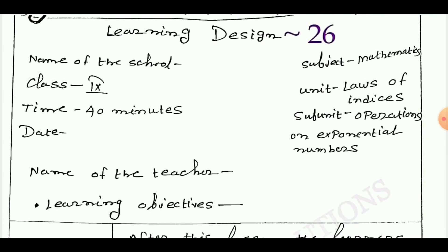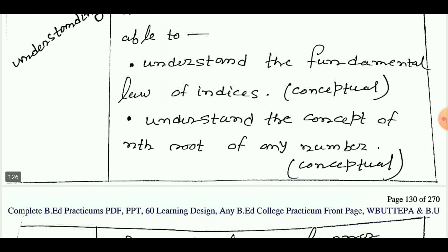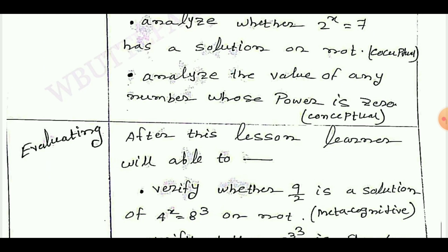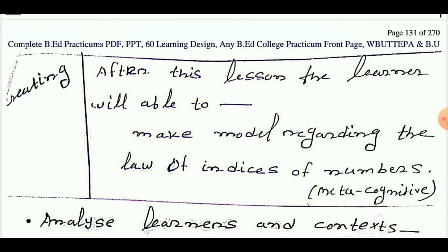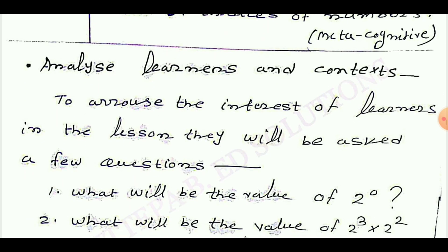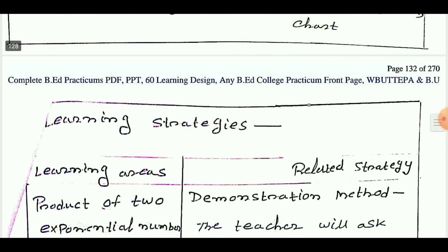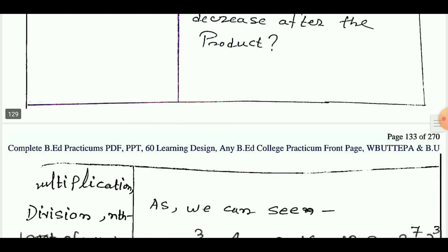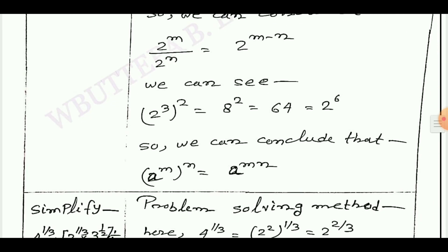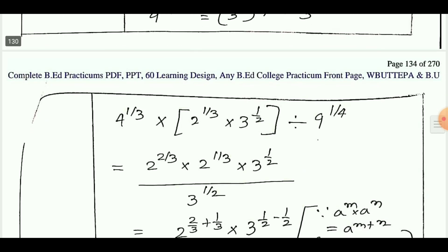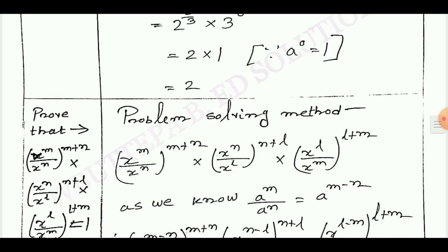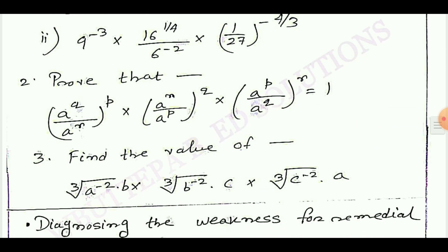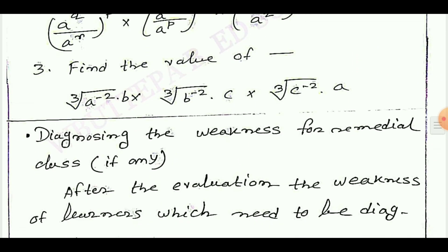Learning design number 26. Creating, analyze learner and context. Next: develop and select learning materials, learning strategy, design for evaluation, and diagnosing the weakness.